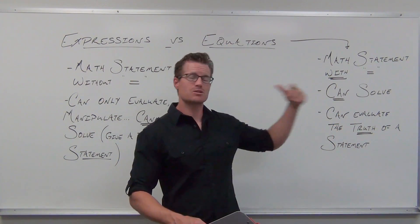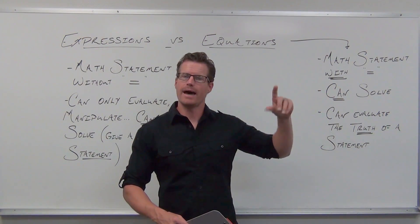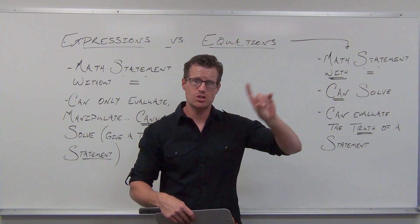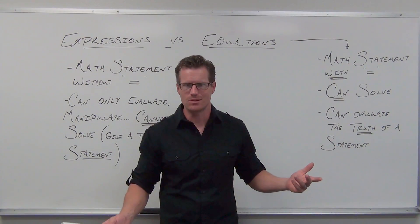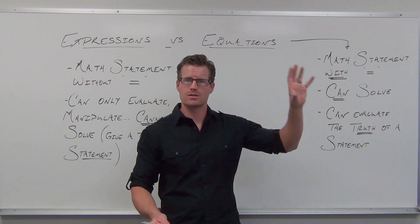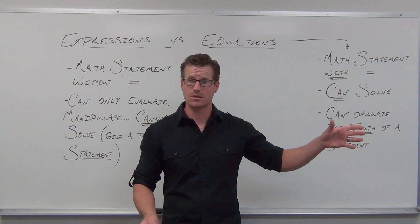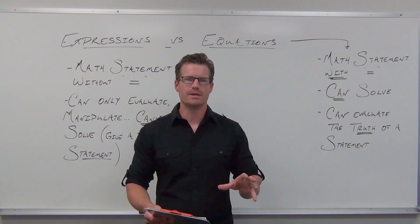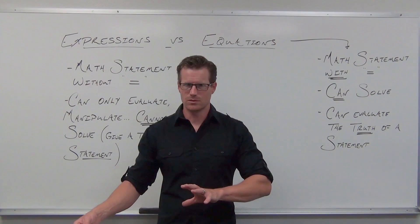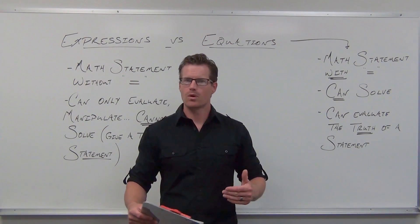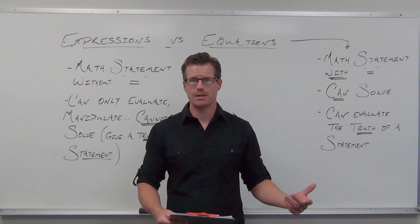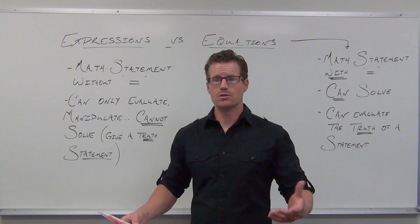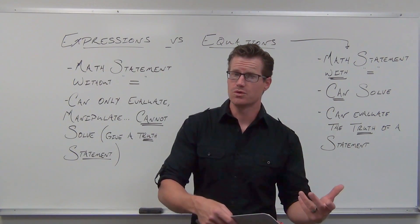So let's take a math statement, put an equal sign in there. That turns an expression into an equation. With an equal sign, you have two sides to the math statement. That means we can solve a math equation. Solving means discovering through our mathematical operations what number or numbers make a true statement. You can't do that with expressions — you can't plug a number into an expression and say you solved it. With equations, some numbers would work and some numbers wouldn't; some would be false and some true.